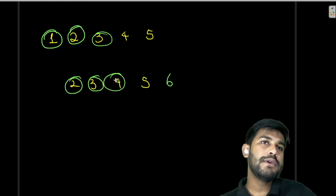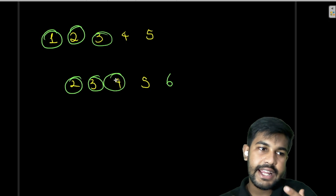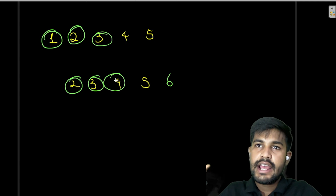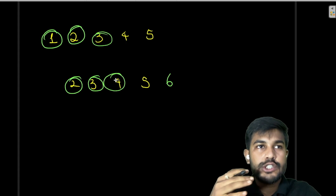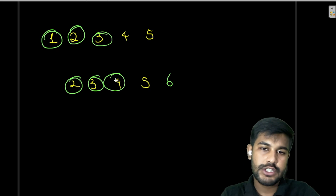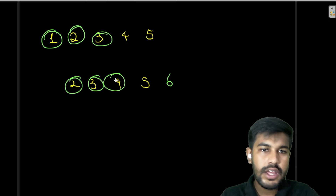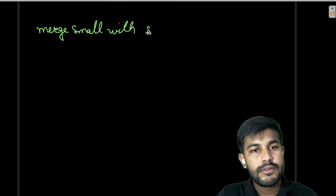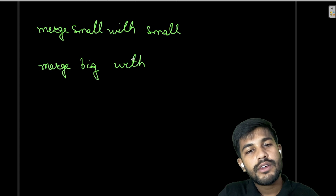The key insight is: if a number is small, there's no point pairing it with a large number from the other array, because a large number would create a big absolute difference. So if we combine large values with large values and small values with small values, the total absolute difference will be minimized. The strategy is: merge small with small, and merge big with big.